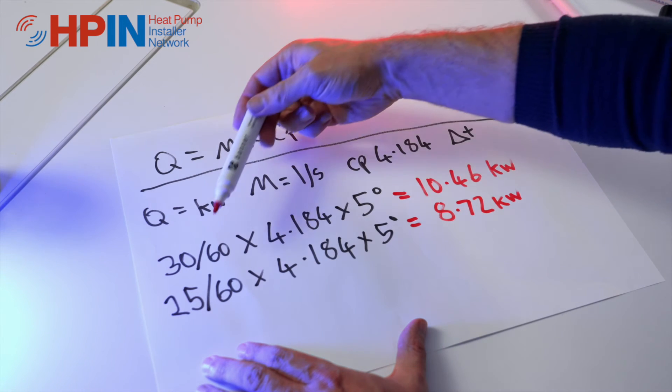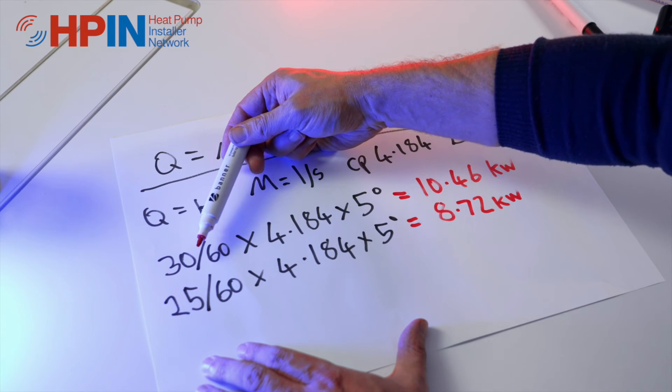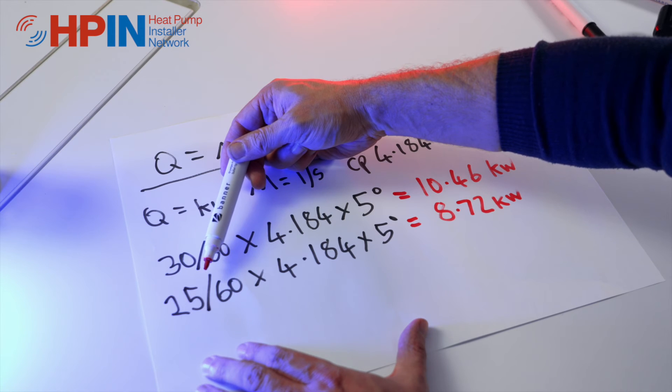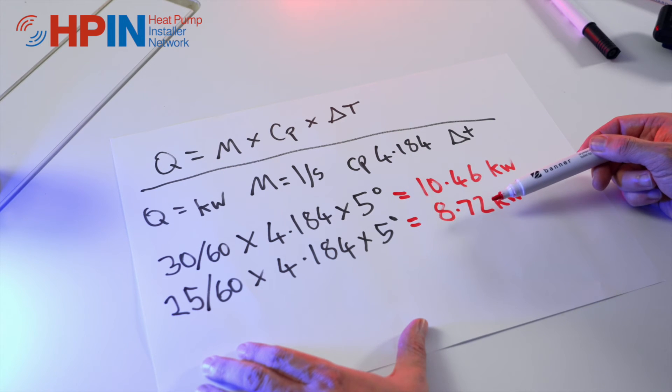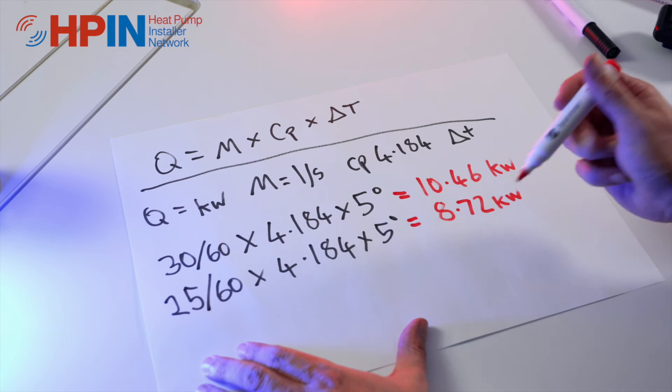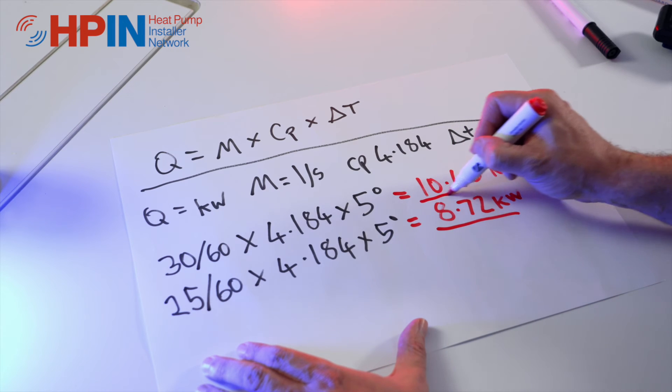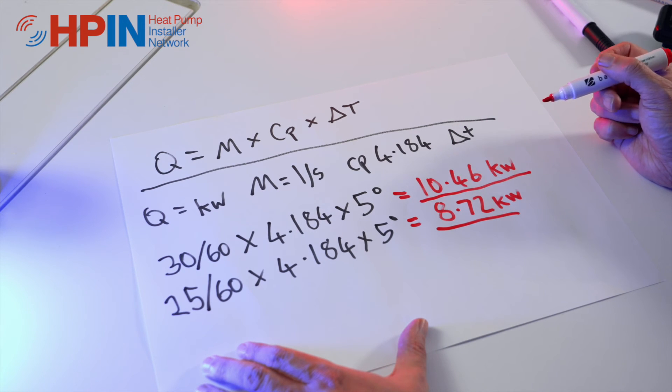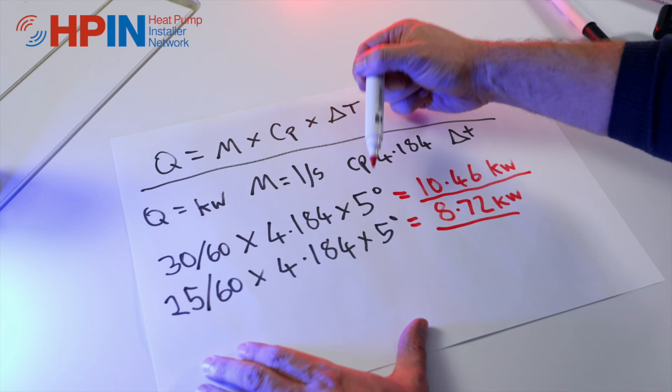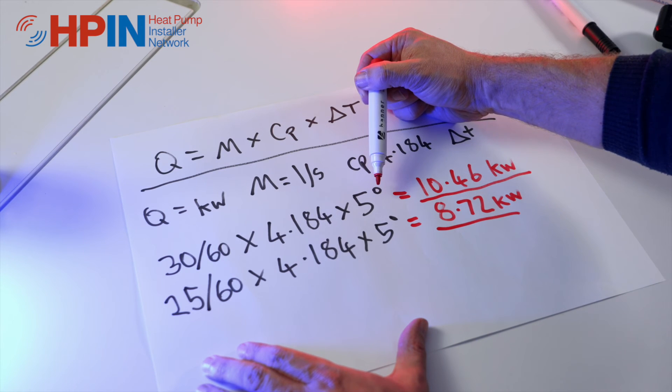So from just dropping our flow rate by 5 litres a minute, I've made a massive difference to the kilowatt output that I'm getting. And that's why flow rates are so important to heat pumps, especially with our 5 degree delta T, our lower delta T.